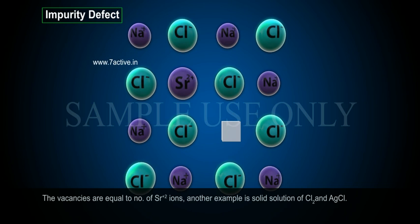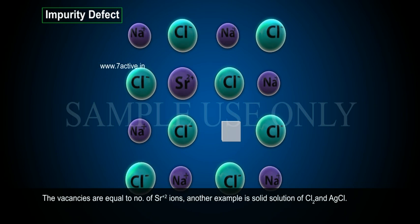The vacancies are equal to the number of Sr2+ ions. Another example is the solid solution of Cl2 (chlorine) and AgCl (silver chloride).